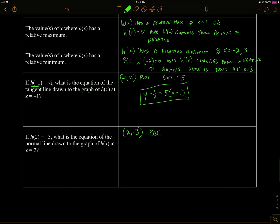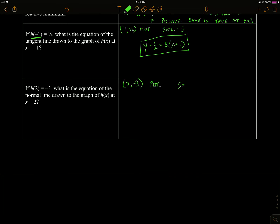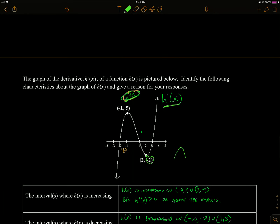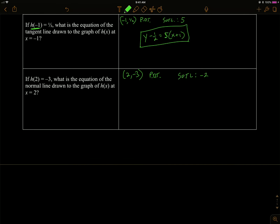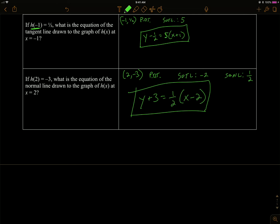Now h of two equals negative three, so the point of tangency is two, negative three. They want the equation of the normal line at x equals two. On the h prime graph at x equals two, the derivative is negative two, so the tangent line slope is negative two. The normal line slope is the opposite reciprocal: one half. The normal line equation is y plus three equals one half times x minus two.